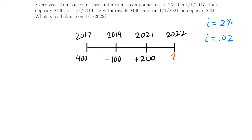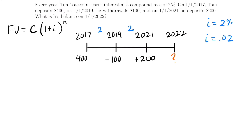We're going to use the equation from Lesson 1 for each transaction: future value equals some deposit C times (1 + interest rate) to the number of compounding periods. We want to find the future value by doing each transaction individually — that's the long way. First, let's see how many years are between each transaction: 2017 to 2019 is two years, 2019 to 2021 is two years, and 2021 to 2022 is one year.